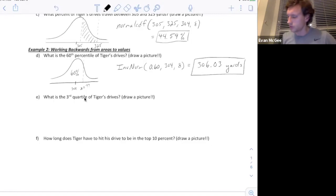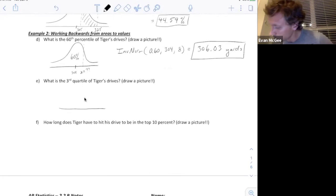What is the third quartile? The other name for the third quartile is the 75th percentile. So 0.75 is our area. We want to know what is the distance. We should know right off the bat it's going to be more than 306 because that is higher than the 60th percentile. In our calculator, we're going to do inverse norm. The area is 0.75, the mean is 304, and the standard deviation is 8. That will take us to 309 yards, 309.4 yards.